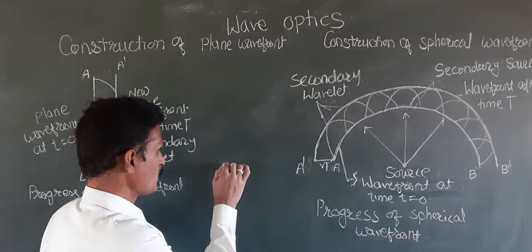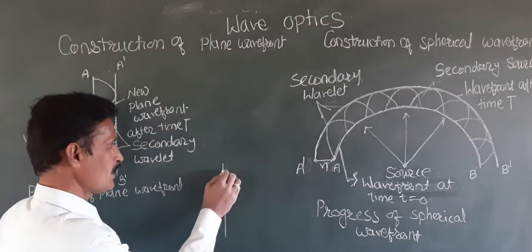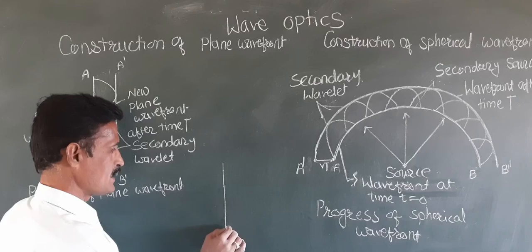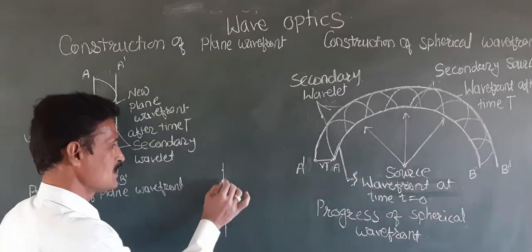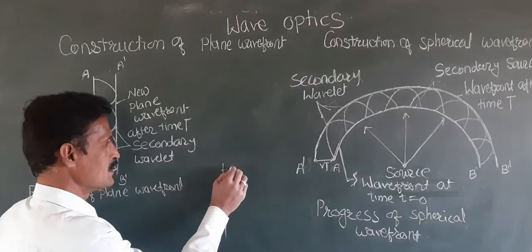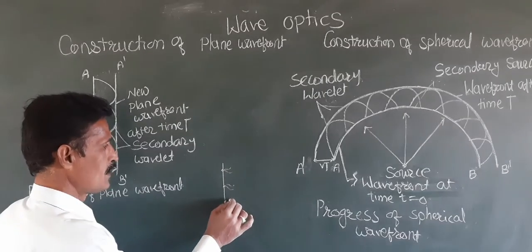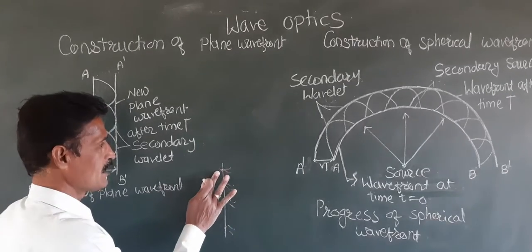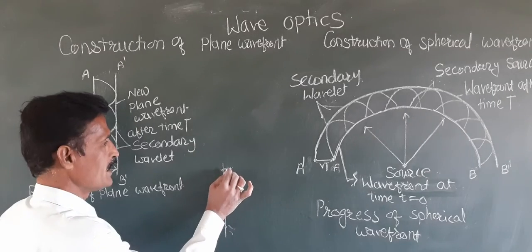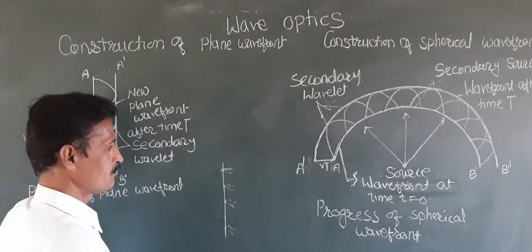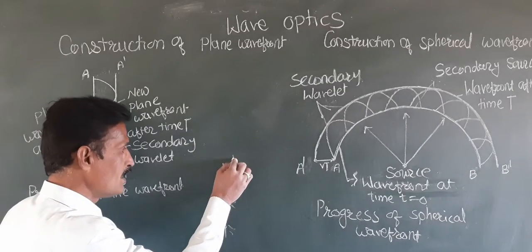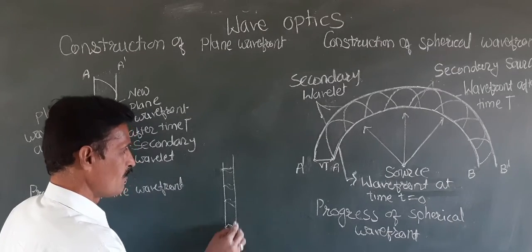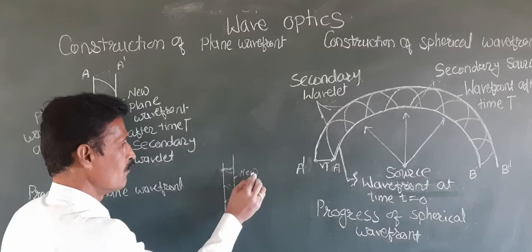Suppose this is the wavefront. According to Huygens' Principle, every point on the wavefront acts as a secondary source. These secondary sources emit secondary wavelets in all directions, but in the backward direction they are ineffective, so they travel along the forward direction. The envelope drawn to all these secondary wavelets represents the new wavefront.